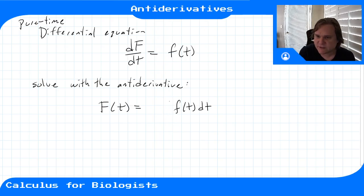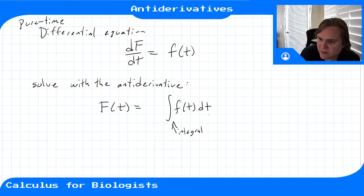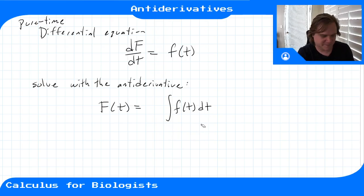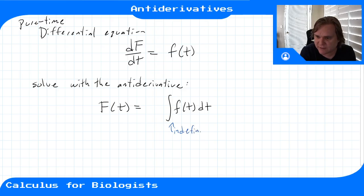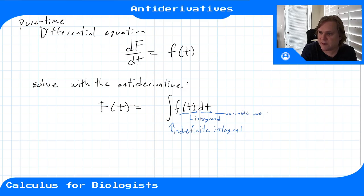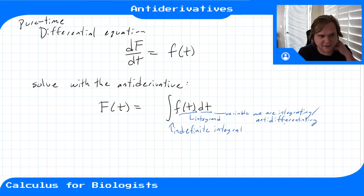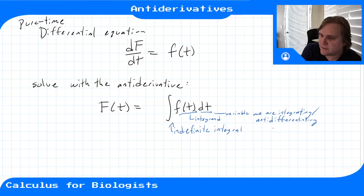We use integral notation — this symbol is called an integral, not an S. The whole expression inside is called the indefinite integral since it has no bounds. Inside, the function we are integrating is called the integrand, and we are taking the anti-derivative with respect to the variable t.